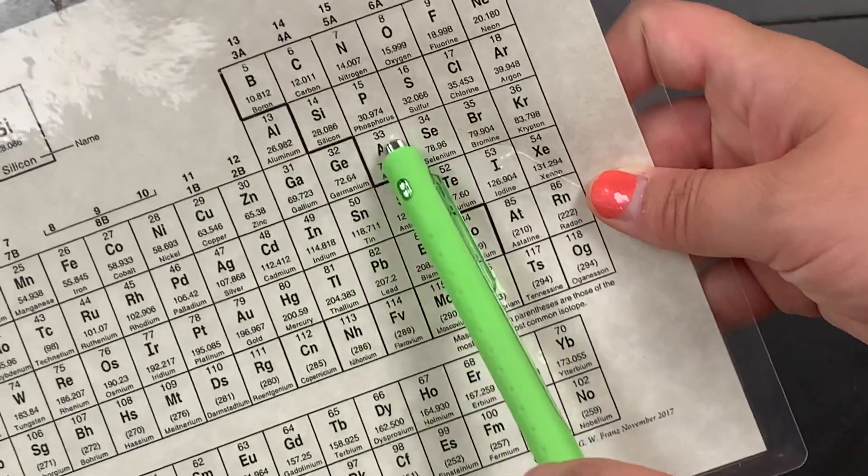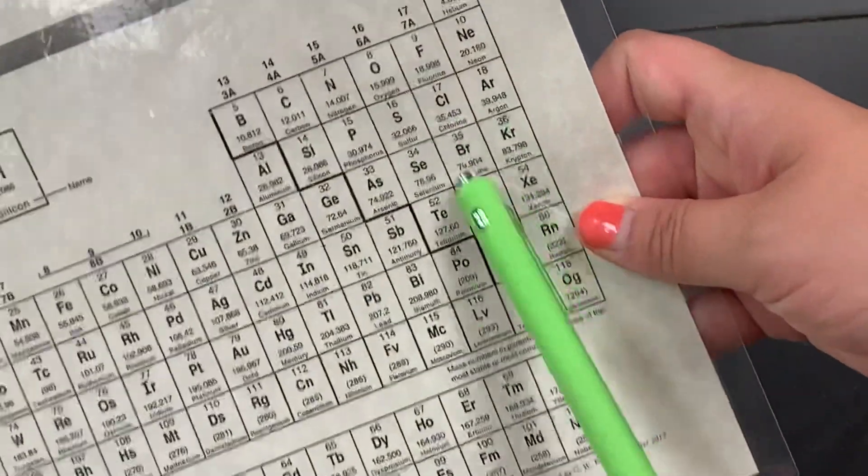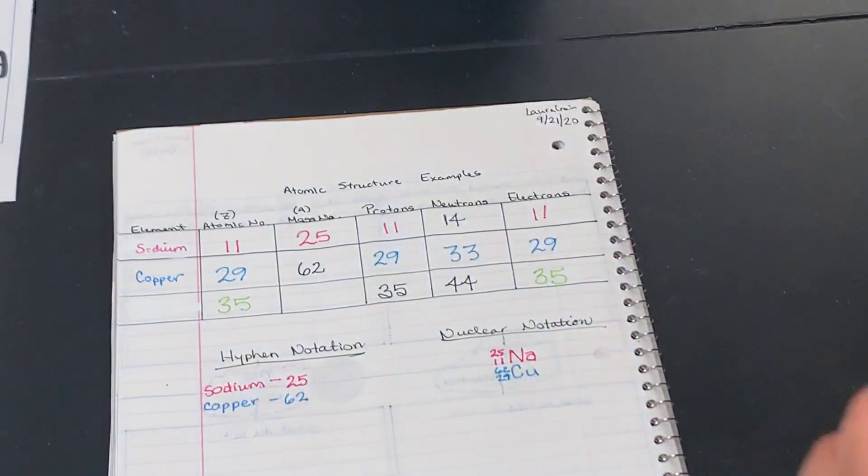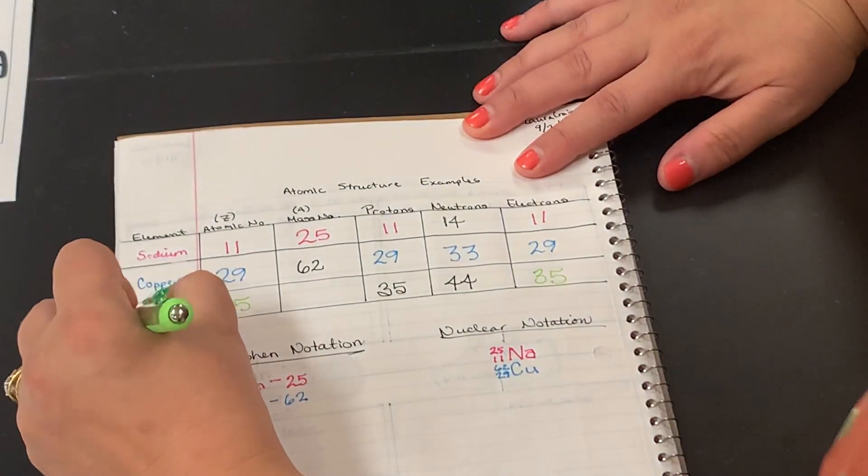31, 32, 33, 34, 35. That would be bromine. So our element here is bromine, symbol Br. So let's fill in our element. This is bromine.